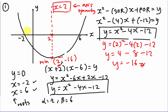The most important part for this type of diagram is understanding what the x-intercepts mean and how to use them to find the equation of the curve. Once you have the equation, use the axis of symmetry to find the x-value of the minimum point, substitute to get y, and you have the full minimum coordinates.